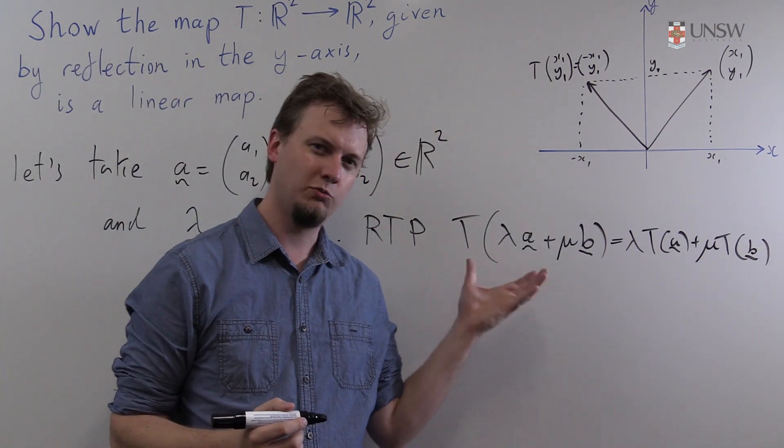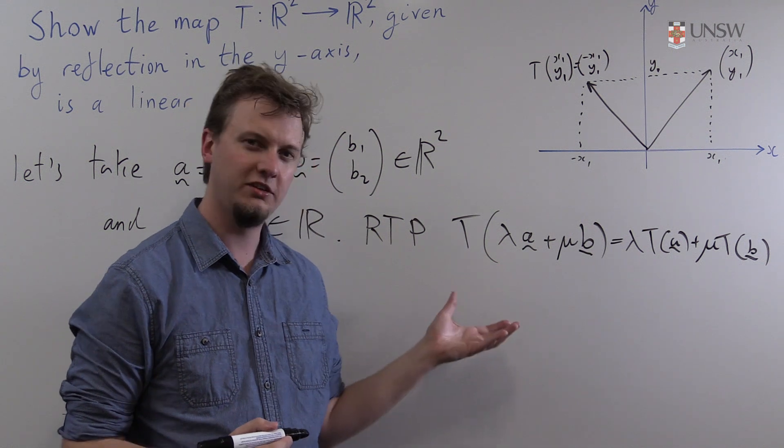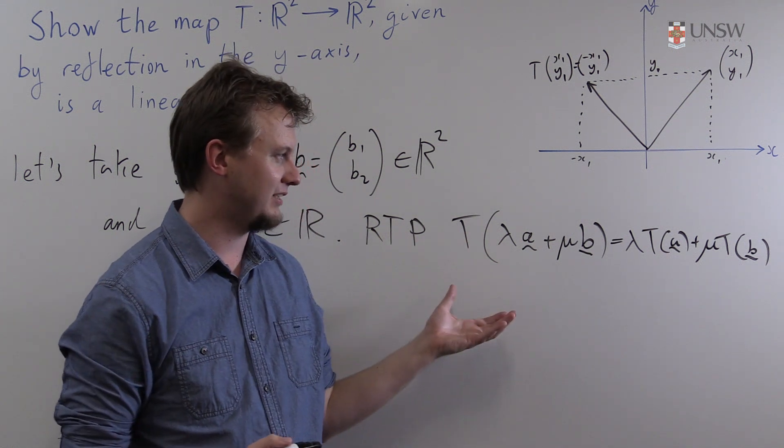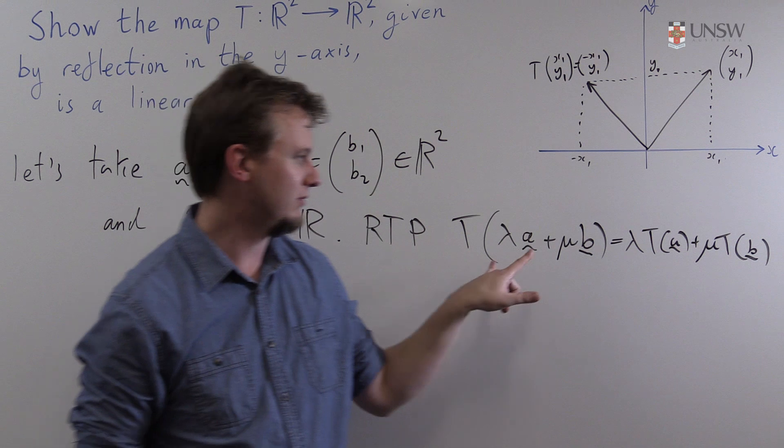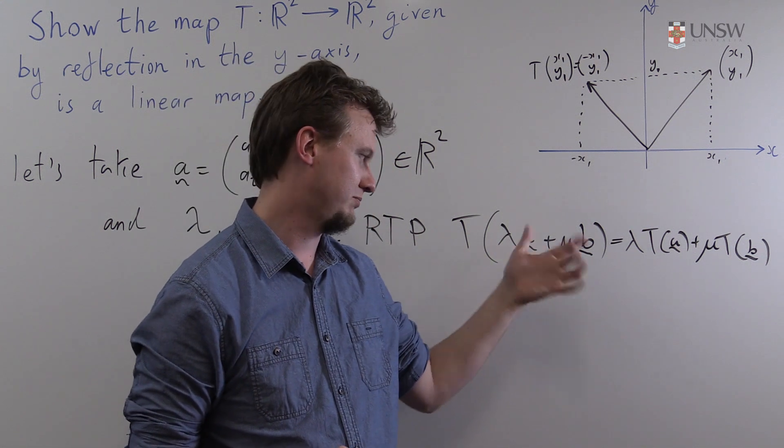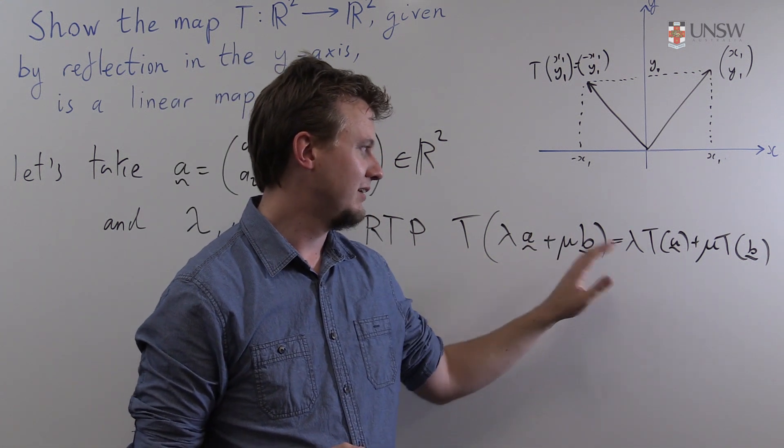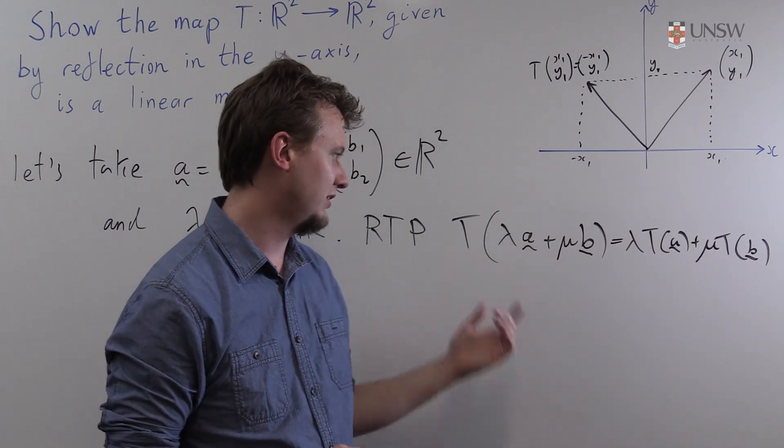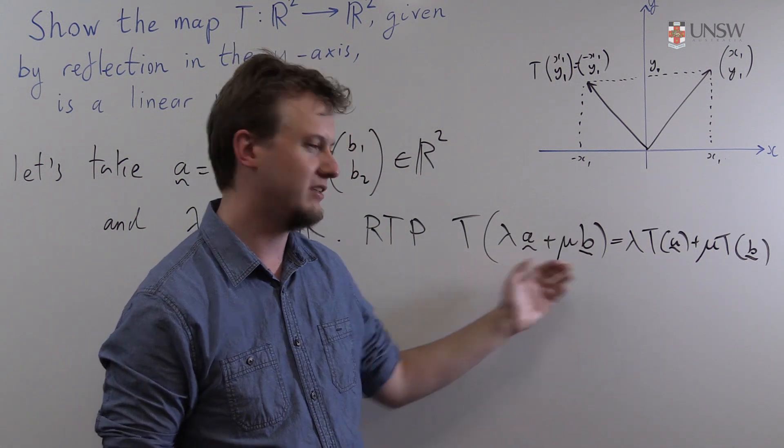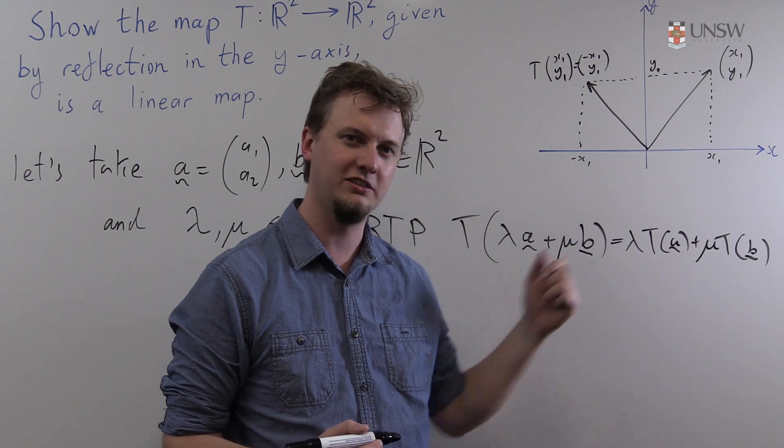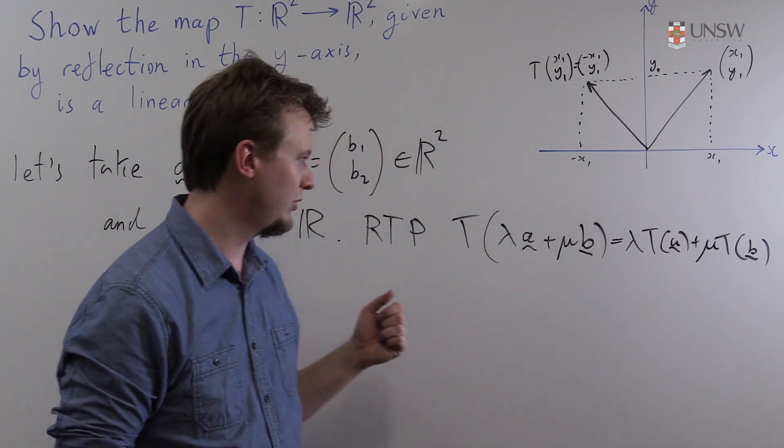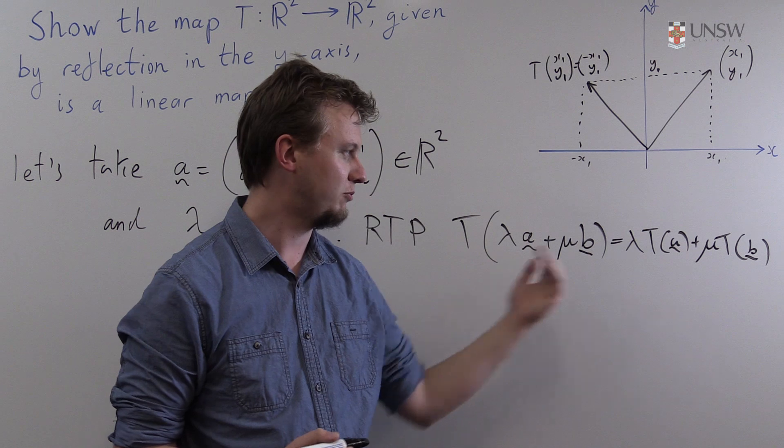So this is really a nice way of bundling together both the addition condition and the scalar multiplication condition. For example, if μ and λ were both one then this condition just becomes the addition condition. If say μ was zero then this condition just becomes the scalar multiplication condition. So we're going to be able to check both conditions with this one simple check.